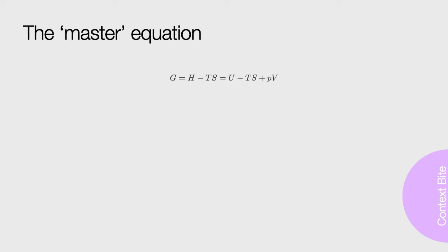If we look at the Gibbs energy for absolute values rather than differences as we usually do, we can say G is equal to H minus TS, and by knowing the relationship between enthalpy and internal energy, then G is equal to H minus TS plus PV.